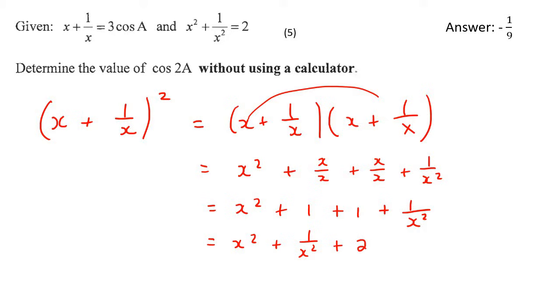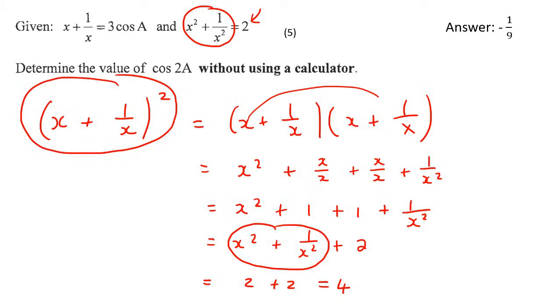Now check this out, guys. It's so awesome. We know that this part over here, if you look here, they've told us that that is equal to 2. So we can just say that that is equal to 2 plus 2, which is 4. So that means that when you square this, what does it give you? 4.